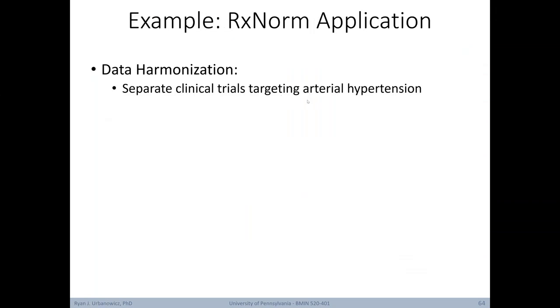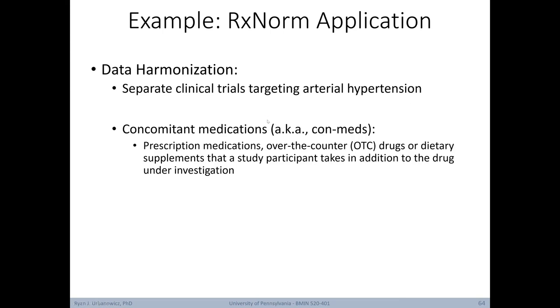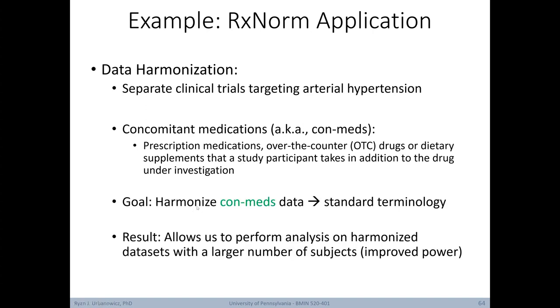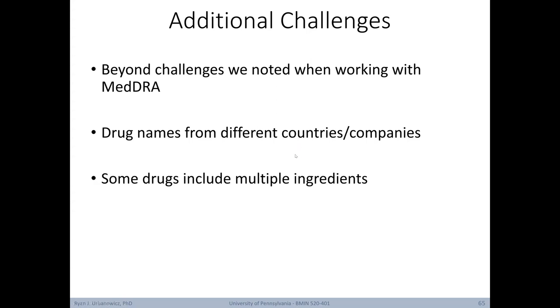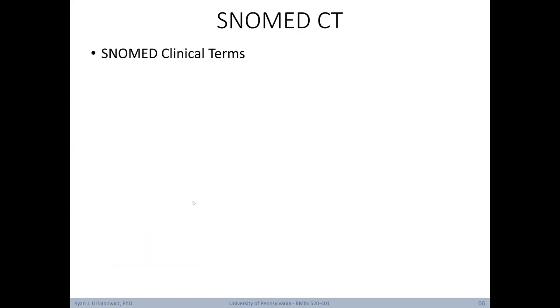I've also gotten a chance to use RxNorm in that same collaboration I talked about earlier. Again, in that study, our goal was to harmonize data across clinical trials of arterial hypertension. But in this case, we're seeking to harmonize concomitant medications. These were prescription medications, over-the-counter drugs, or dietary supplements that a study participant takes in addition to the drug under investigation. Again, our goal was to harmonize these conmeds using a standardized terminology. In this case, that standardized terminology came from the ontology RxNorm. In working with RxNorm, there were a few additional challenges beyond the ones we noted when we used MedDRA to harmonize adverse events and medical history. For example, drug names differed based on whether they came from different countries or companies. Additionally, some drugs include multiple ingredients that needed to be broken apart as separate matches. And there were also discrepancies in terms of dose. In other words, what units were used to describe dose and what would be considered a normal dose.